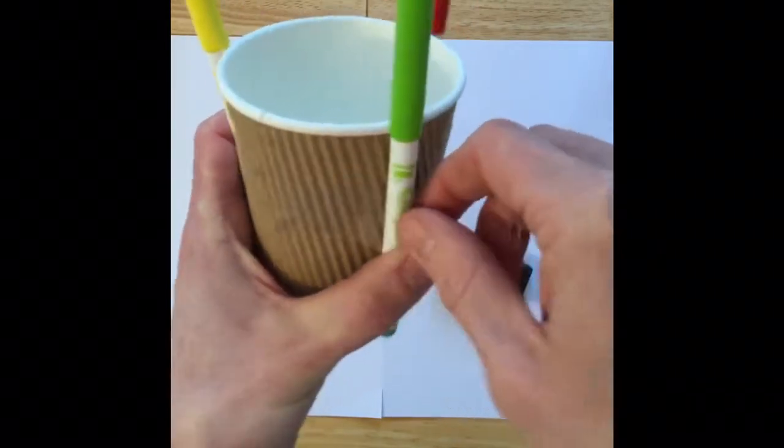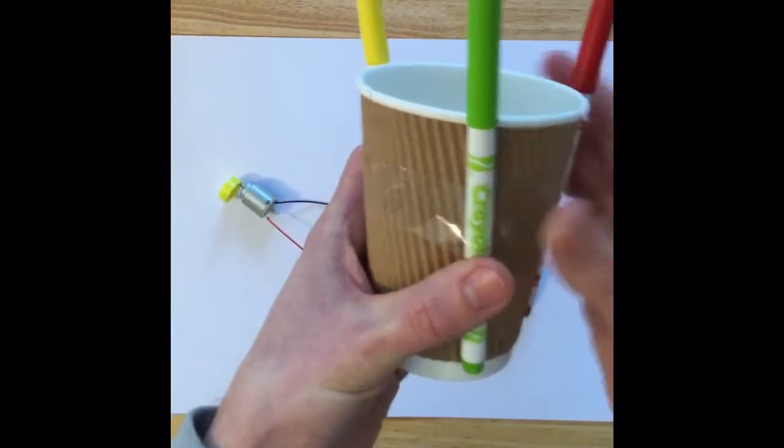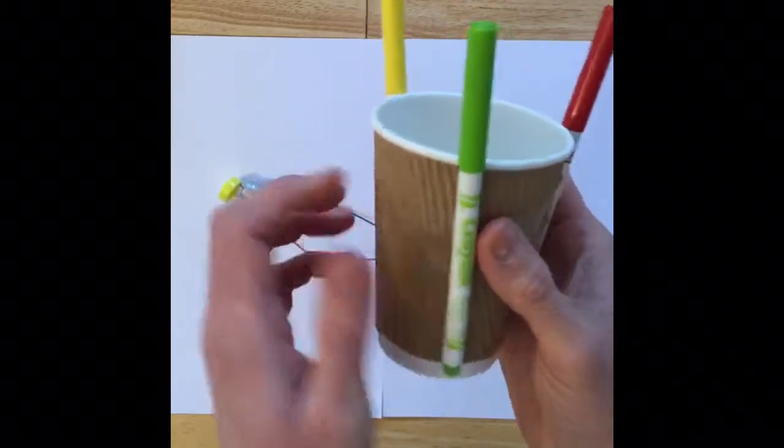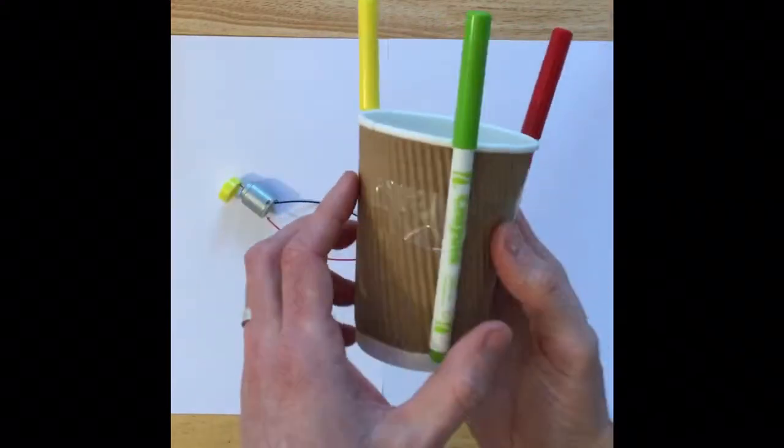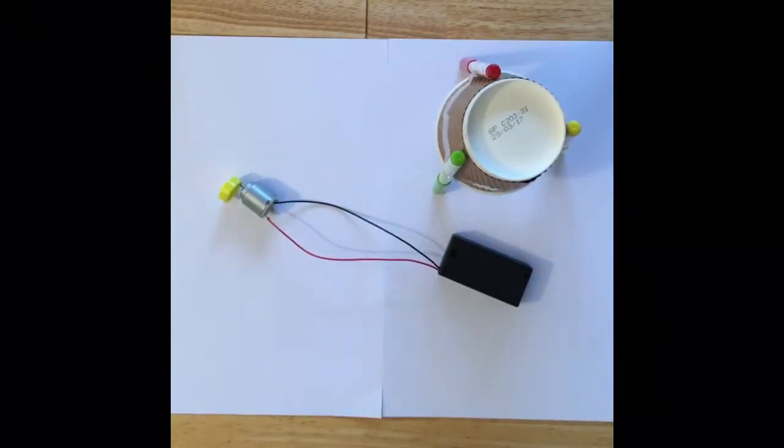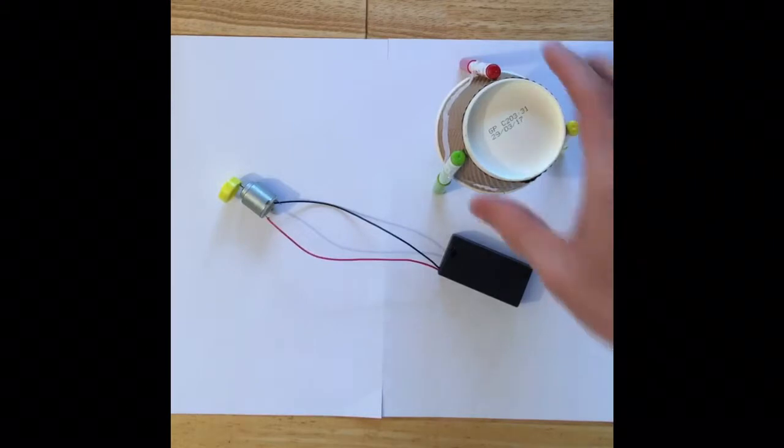There we go. Now I'm doing this quite quickly for the video using only one bit of sellotape, but you're probably going to need more than one bit of sellotape per leg. But just so that you can see the idea, that's what it looks like and it allows the cup to stand up like this.